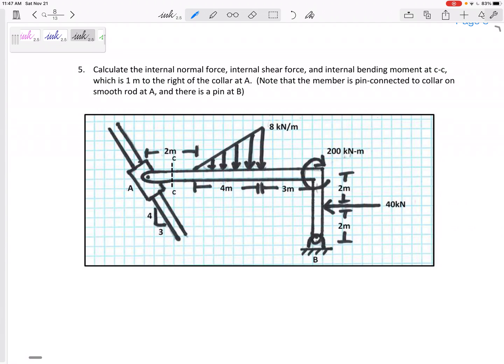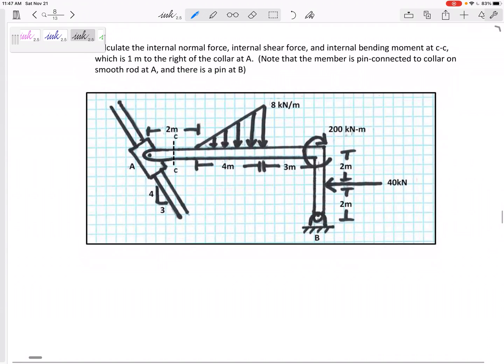So look at this one. I drew this one so I could throw everything at you, I guess. I've got distributed loads, a couple moment, pin at B, and then this is a pin connected collar. So usually I want to maybe draw a free body diagram. I'm not going to grade this free body diagram, so you can do however you want to. I'm going to draw on top of this.